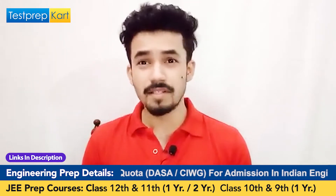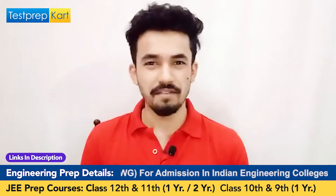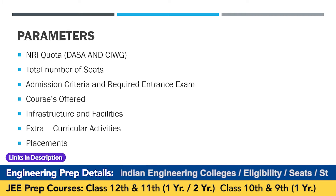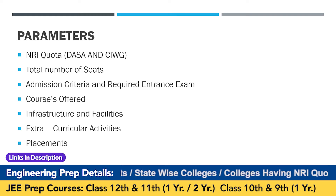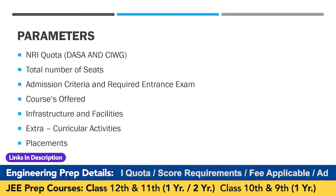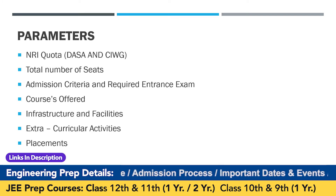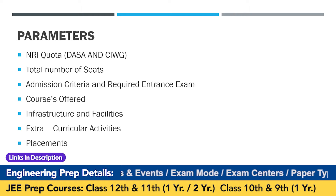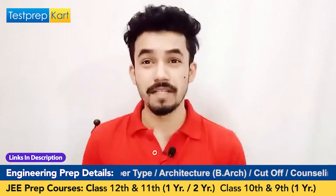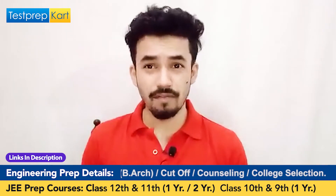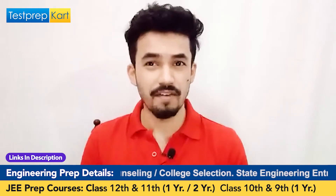These are the seven parameters on which we'll discuss the differences between IITs and NITs: NRI quota, total number of seats, admission criteria and required entrance exam, courses offered, infrastructure and facilities, extracurricular activities, and placements. If after this video you still have any doubts or questions, feel free to ask in the comment section below.